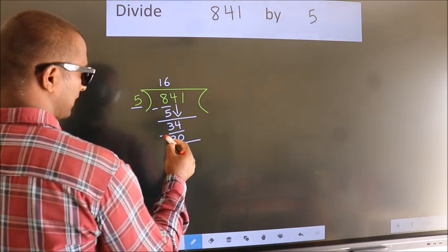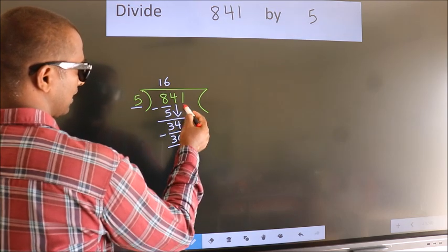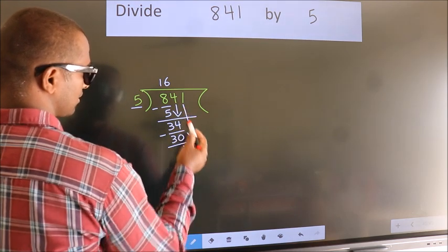Now we subtract. We get 4. After this, bring down the next number. So 1 down.